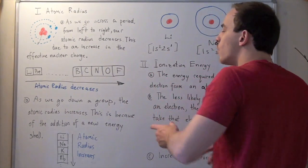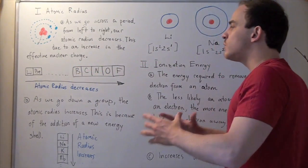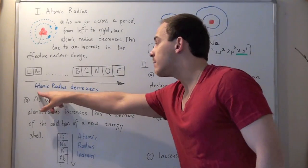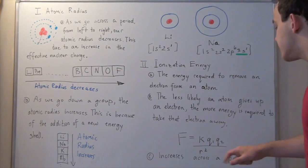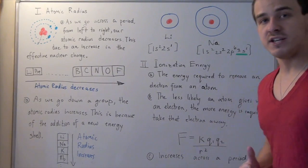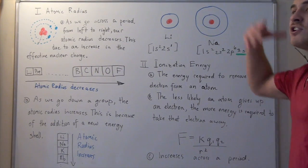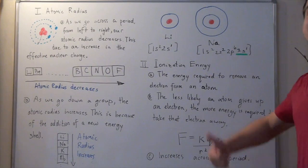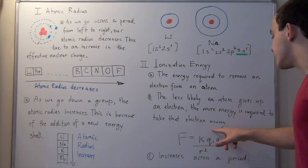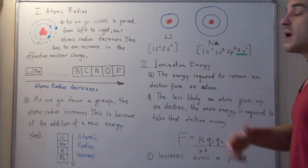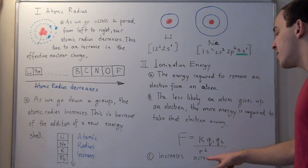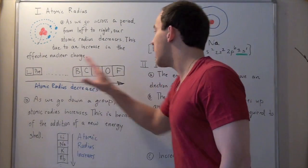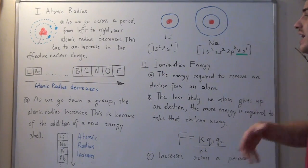As we go from left to right, we have a higher effective nuclear charge, which means we have a greater force. Also take this into account: as we go across, our atomic radius decreases, and that means our denominator R also decreases. So our Q's increase and our R decreases, and whenever the denominator decreases, our force tends to increase. Not only does the increase in charge cause the force to go up, but also the decrease in atomic radius tends to increase our force. Therefore, as we go from left to right, our ionization energy also increases.